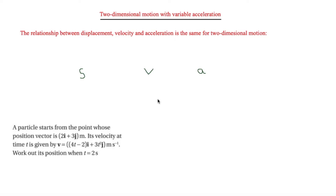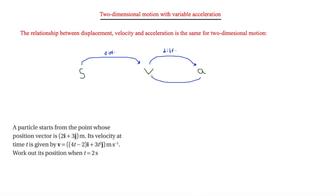In this video we are looking at two-dimensional motion with variable acceleration. The relationship between displacement, velocity and acceleration is the same for two-dimensional motion as it is for one-dimensional motion. To get from displacement to velocity you differentiate, and from velocity to acceleration you also differentiate. To get from acceleration to velocity you integrate, and from velocity to displacement you also integrate.